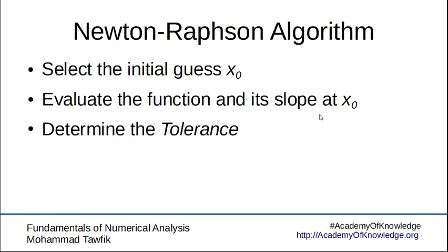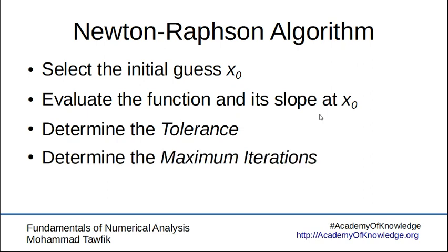Following that, we determine the tolerance and the maximum number of iterations. The tolerance is the accepted error and the maximum number of iterations is how many times to use the algorithm. This is just to prevent the algorithm from going infinitely in case we could not find a solution. Finally, we initiate the counter that counts the number of iterations.